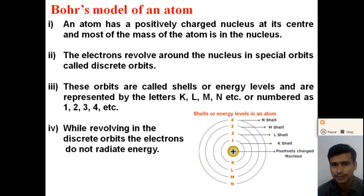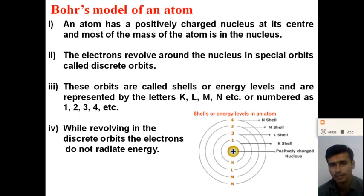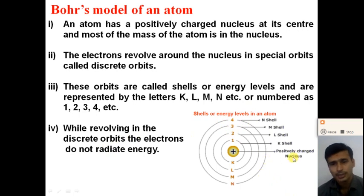The discrete orbits are represented by the letters K, L, M, N or by numbers 1, 2, 3, 4 representing the first, second, third, and fourth orbits. The number of electrons revolving in different orbits is different, so we will now discuss how the electrons are distributed in different orbits.